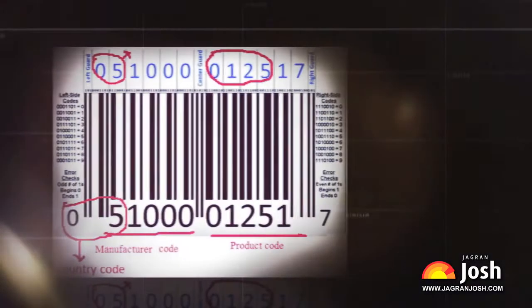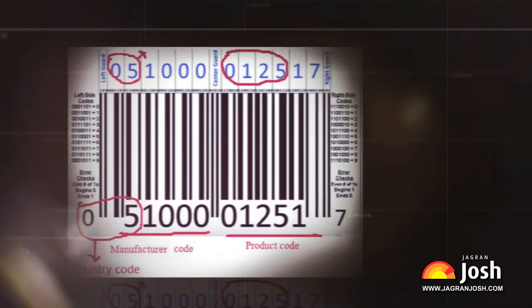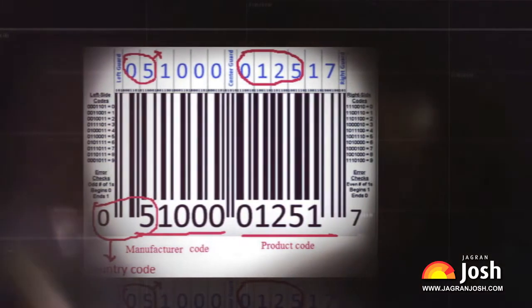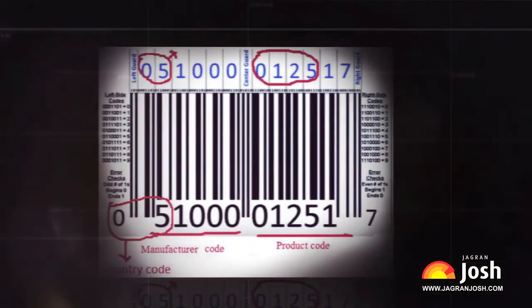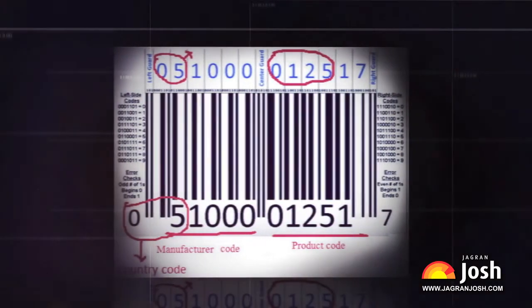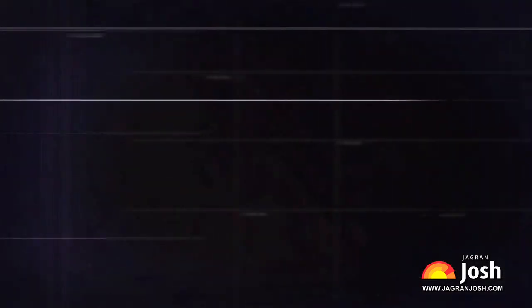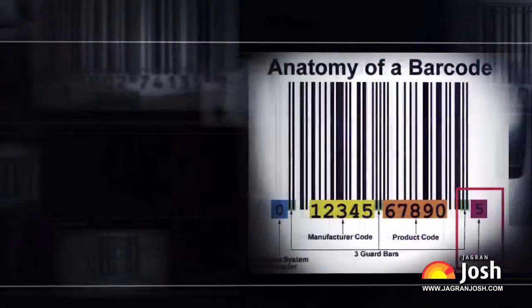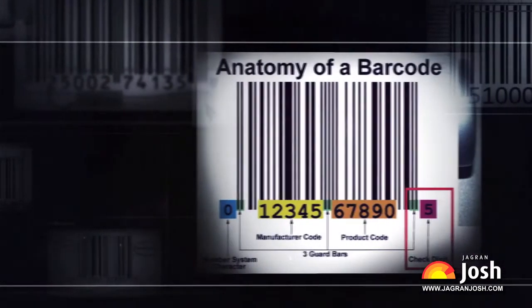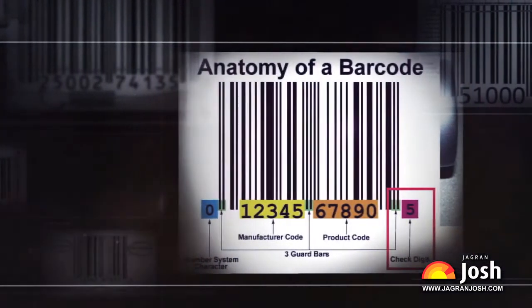A barcode contains information about a product like its price and weight, date of manufacturing and expiry, and the name of the manufacturer. Every product has a unique barcode all over the world.